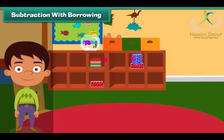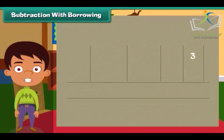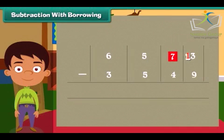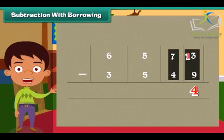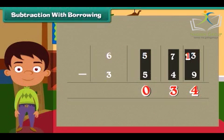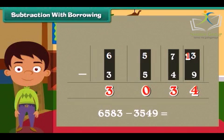Subtraction with borrowing. It's time to learn subtraction involving borrowing. Subtract 3549 from 6583. We again start from the ones column. Since 3 is smaller than 9, we will borrow 1 ten from 8. Therefore, 3 will become 13 and 8 will become 7. Subtract 9 from 13 — we get 4. Subtract tens: 7 minus 4 is 3. Similarly, subtract hundreds: 5 minus 5 is 0. Subtract thousands: 6 minus 3 is equal to 3. So 6583 minus 3549 is equal to 3034.